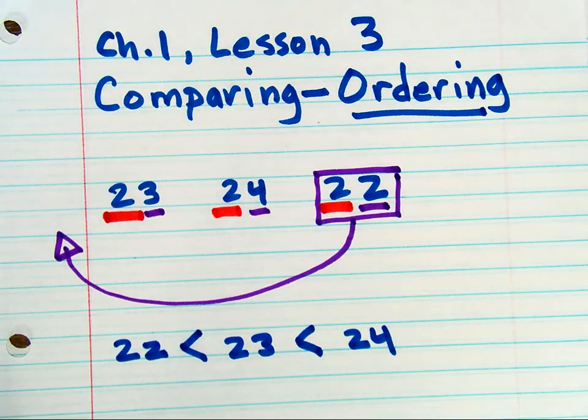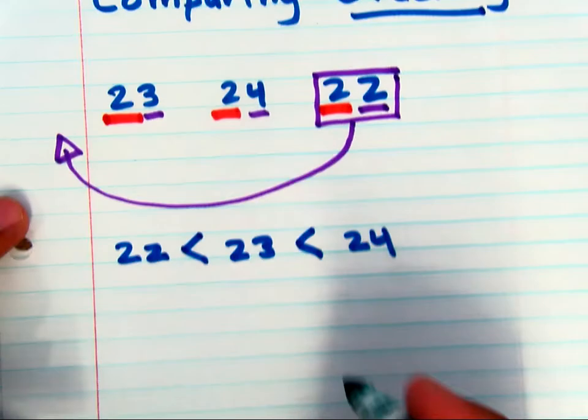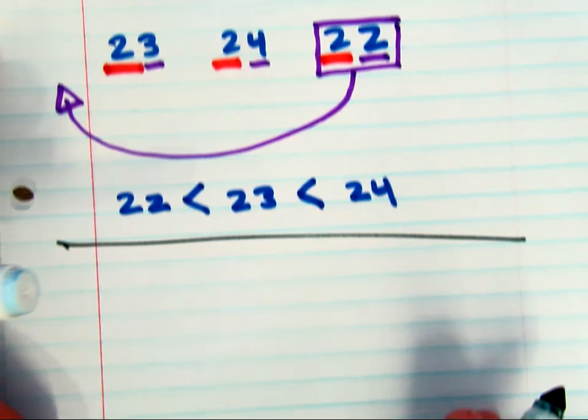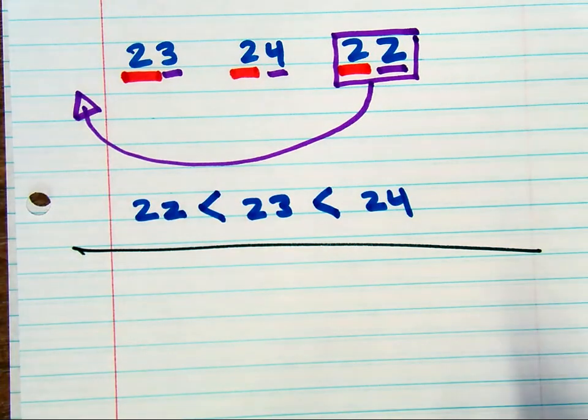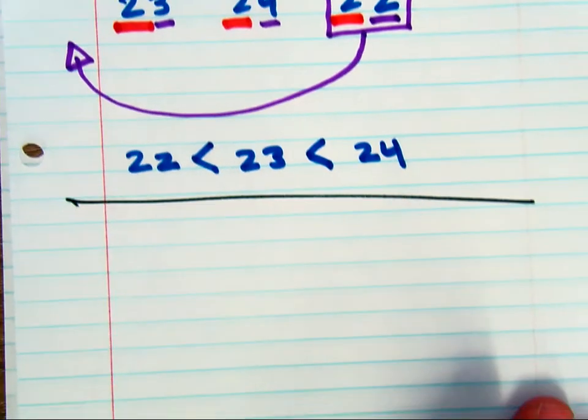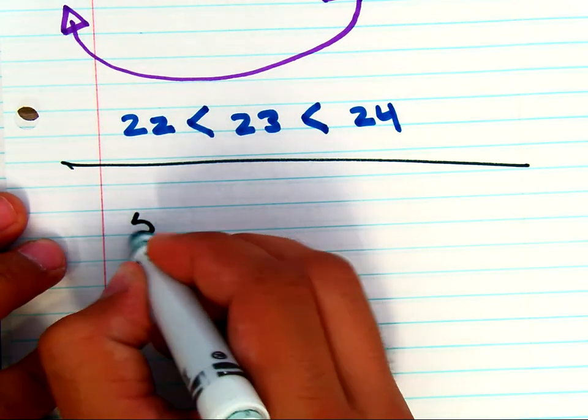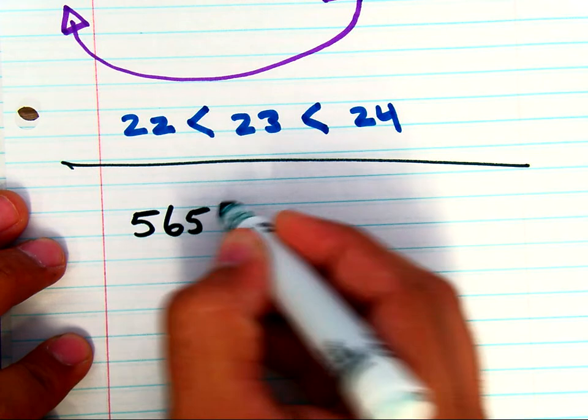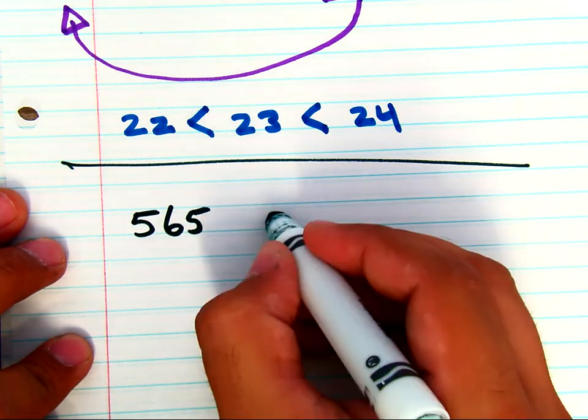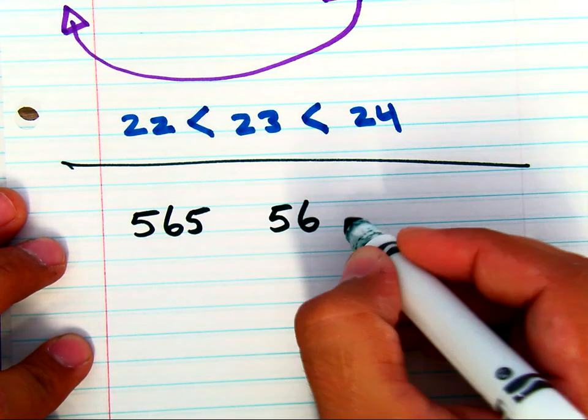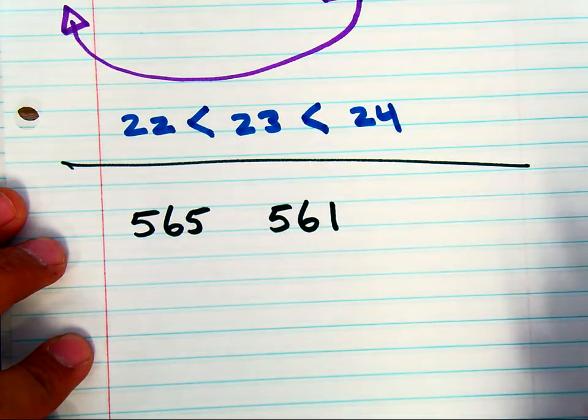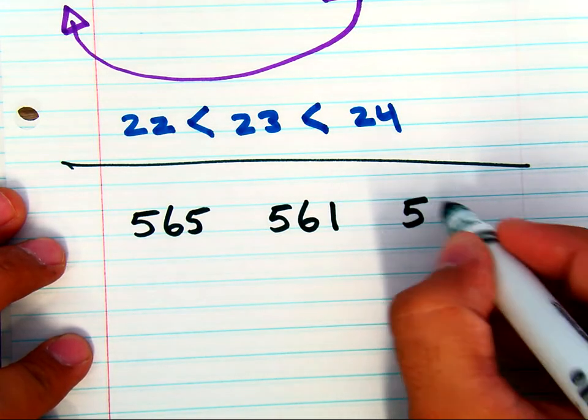Now when you have larger numbers, it is done just the same. So let's take some larger numbers here, move things over, and take 565, 561, and 516.